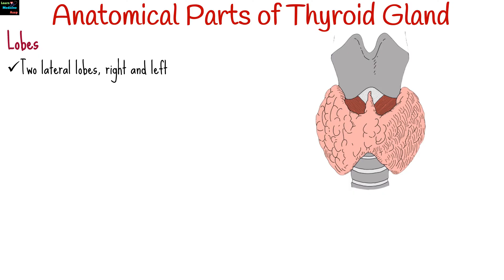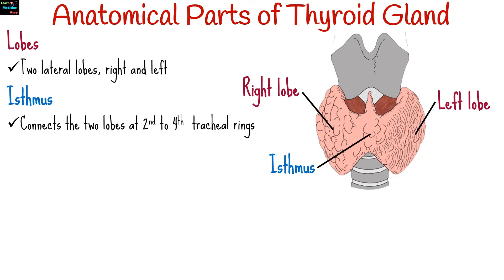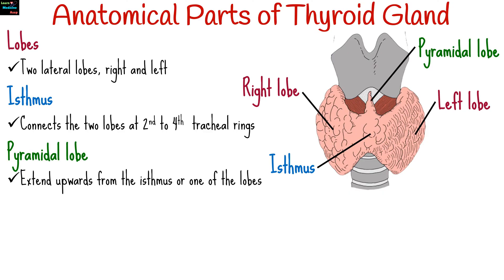The thyroid gland has two lateral lobes, right and left, which are located on either side of the trachea. A thin band of thyroid tissue called the isthmus connects the two lobes at the level of the second to fourth tracheal rings. A third, small pyramidal lobe may extend upwards from the isthmus or one of the lobes. This lobe represents a remnant of the thyroglossal duct.